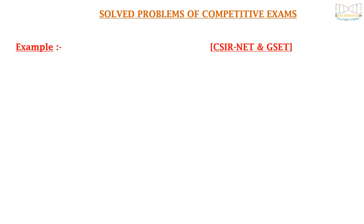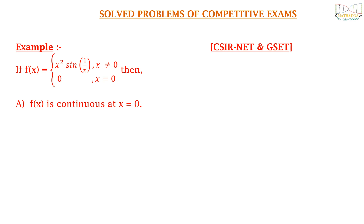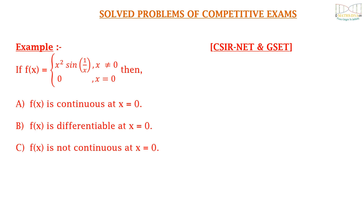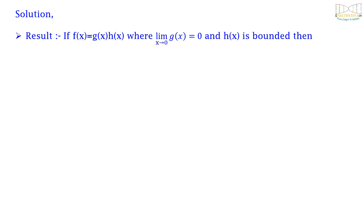Let us solve a problem from the CSIR NET exam. The question is: if f(x) = x² sin(1/x) when x ≠ 0, and f(0) = 0, then which is true — (a) f is continuous at x = 0, (b) f is differentiable at x = 0, (c) f is not continuous at x = 0, or (d) none of the above? Before solving, we need a key result: if f(x) = g(x)·h(x), where the limit of g(x) as x → 0 is 0 and h(x) is bounded, then the limit of f(x) as x → 0 is also 0.